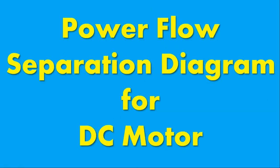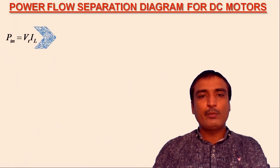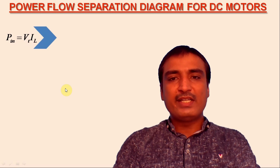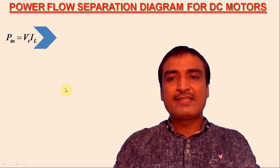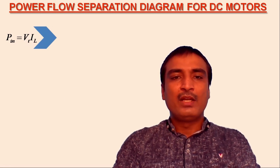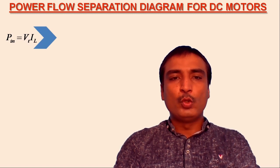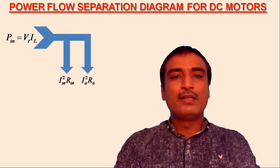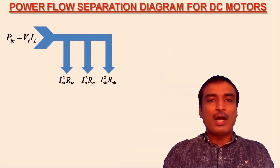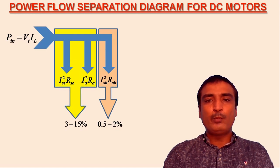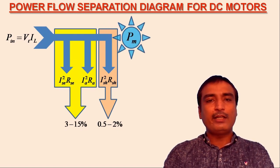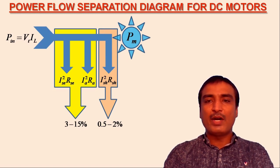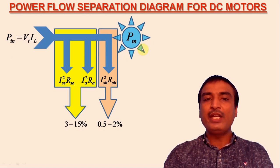Now consider the case of DC motor, where an electrical input power is supplied to the terminals of the motor. The input electrical power is immediately reduced by certain electrical losses, which mainly include series field winding copper loss, armature circuit copper losses and shunt field winding copper loss. After subtracting these electrical losses from the input electrical power, what remains is the net electrical power, which is converted to mechanical power by electromechanical energy conversion.